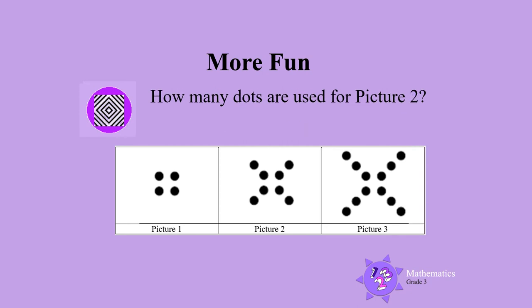How many dots are used for picture two? Let's count. One, two, three, four, five, six, seven, eight. Eight dots are used to make picture two.